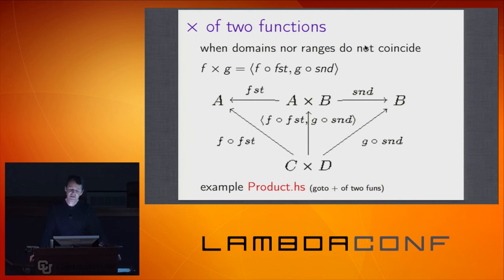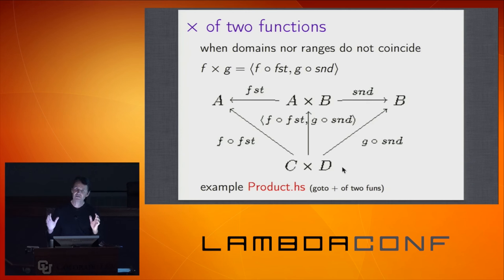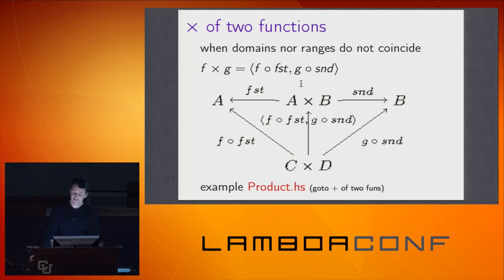There's also the product of two functions — used when neither the domains nor the ranges coincide. You're given a pair (c, d) and return a pair (a, b). The definition of 'f × g' takes the first element c and runs f on it, takes the second element d and runs g on it, and returns the result as a pair. So you end up with a × b.